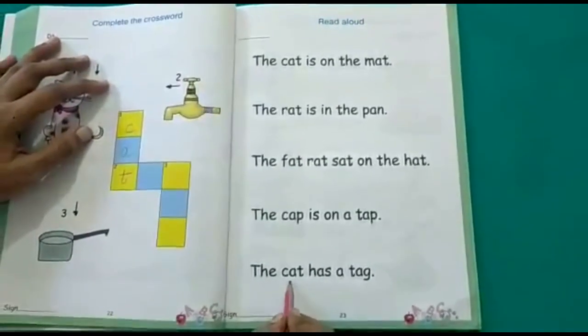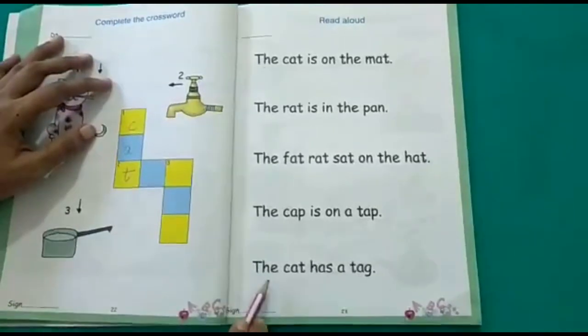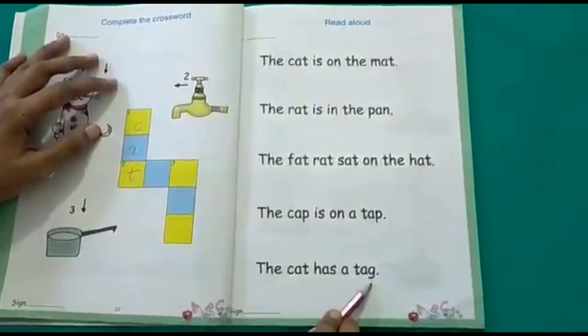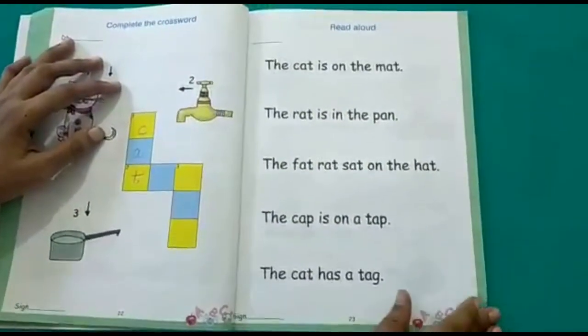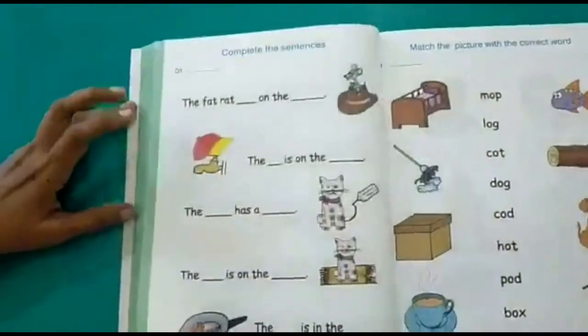And the last sentence. The cat has a tag. The cat has a tag. So these are the sentences here. Now we have to fill in the blanks on the next page.